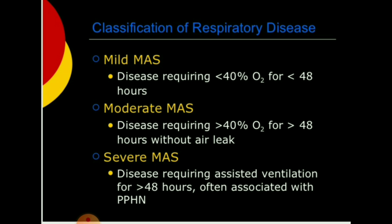Classification of respiratory disease in MAS: Mild MAS requires less than 40 percent oxygen for less than 48 hours. Moderate MAS requires more than 40 percent oxygen for more than 48 hours without air leak. Severe MAS requires assisted ventilation for more than 48 hours, often associated with PPHN.